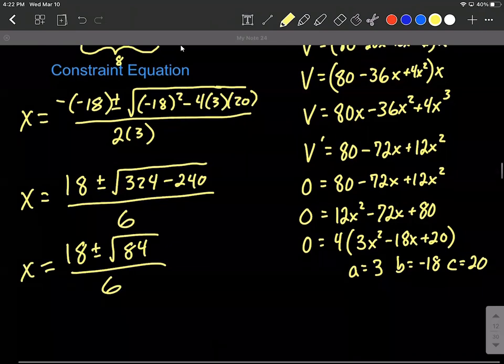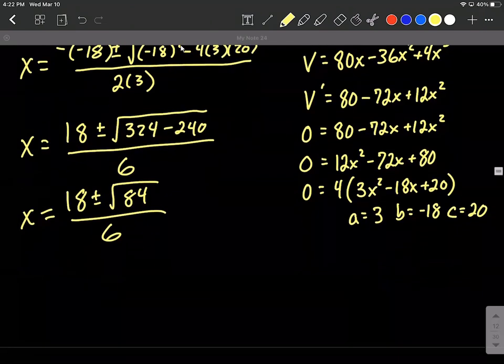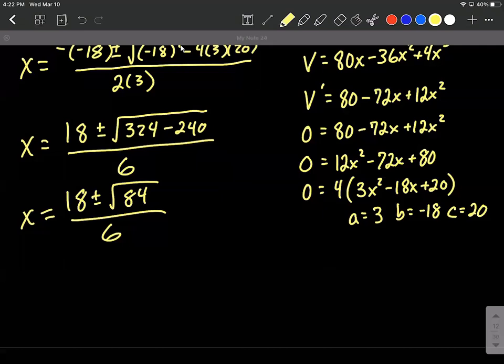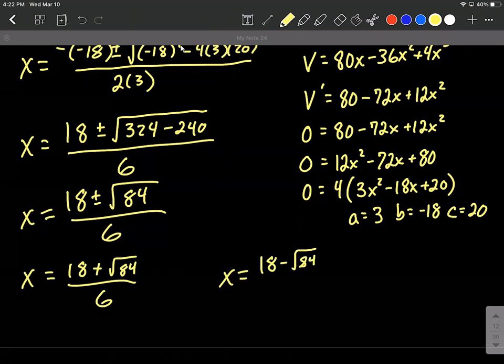And this will reduce down a little bit. But instead of reducing this down and getting a more exact answer, let's go ahead and get approximations to figure out how much we're going to be cutting out of the corners. So we have two solutions here. We have x equals 18 plus the square root of 84 over 6. And we have x equals 18 minus the square root of 84 over 6.